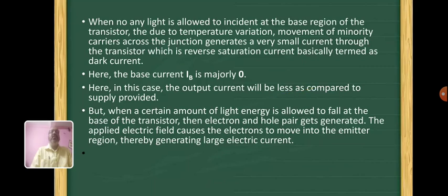When no light is allowed to incident at the base region of the transistor, due to temperature variation, movement of minority carriers across the junction generates a very small current through the transistor, which is reverse saturation current, basically termed as dark current. Here, the base current IB is majorly zero.